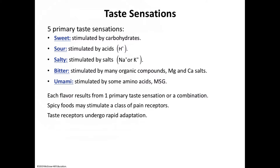Moving to page 456 on taste sensations: taste cells look alike microscopically, yet they can sense five types of tastes. Each type is most sensitive to a particular type of chemical stimulus. The different types of taste buds provide at least five primary gustatory sensations. These five primary taste sensations are: sweet, sour, salty, bitter, and umami.